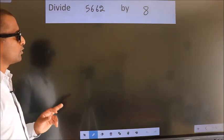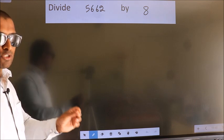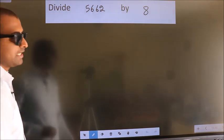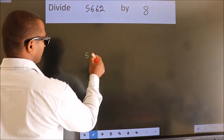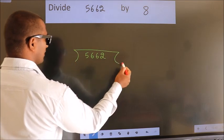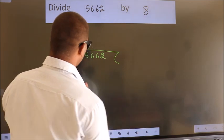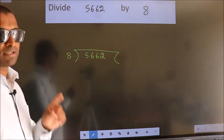Divide 5662 by 8. To do this division, we should frame it in this way: 5662 here, 8 here. This is your step 1.